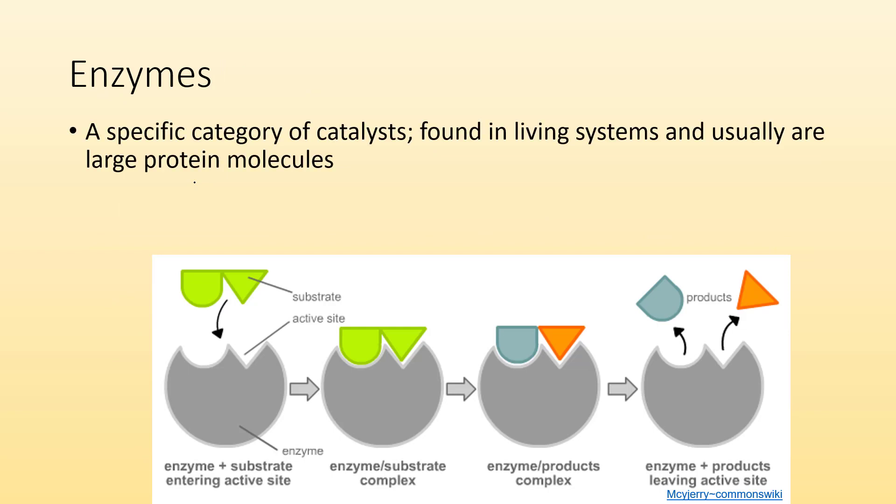Enzymes. Enzymes are a specific category of catalysts. Enzymes are a special type of catalysts, and they're found in living systems and are usually large protein molecules. It's specific to one substance in one reaction. They're very specific. It's like the lock and key model, how only one specific key shape will open that specific lock. Only one specific enzyme will bind to reactants in one particular reaction.